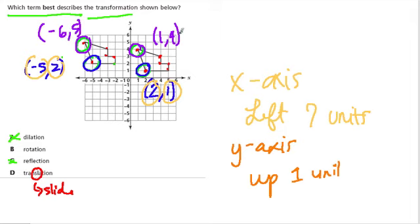Well, the y value went from 4 to 5, just as 1 went to 2 and went up 1 unit. Great. And we went from 1 all the way down to negative 6. That's going left 7 units, just as we did for the other point. So this shape basically slid to the left. Everything slid to the left 7 units, and then everything went up 1 unit. So I would say this is a translation.